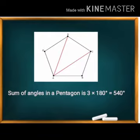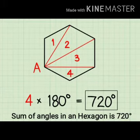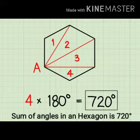We find the sum of interior angles of a pentagon in the same manner. We divide the pentagon into 3 triangles, then add the interior angles: 180 × 3 = 540 degrees. For a hexagon, we divide it into 4 triangles, giving a sum of 4 × 180 = 720 degrees.